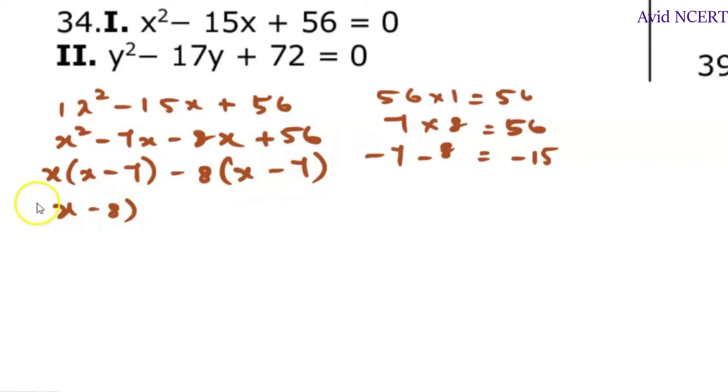which is x minus 8 times x minus 7. So here the value of x is plus 8, and it goes on the other side becomes plus 7.